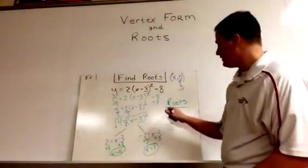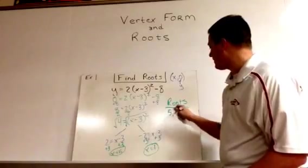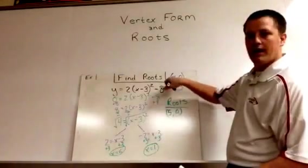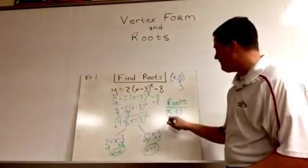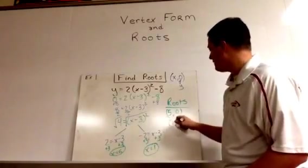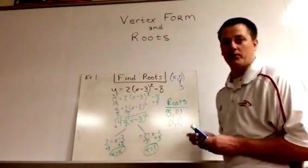These roots are 5, 0. x just gets replaced by 5 or 1, 0, so two possible roots there.